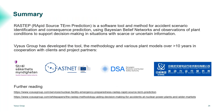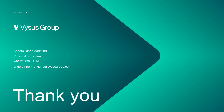In summary: RUSTEP is a software tool and method for accident scenario identification and consequence prediction. We use Bayesian belief networks together with observations to support decision making, especially in situations with little or uncertain information. We have been developing the tool, methodology, and plant models for over 10 years in cooperation with clients and project partners. There is further reading on the Vices Group web page, and links will be distributed after the webinar.